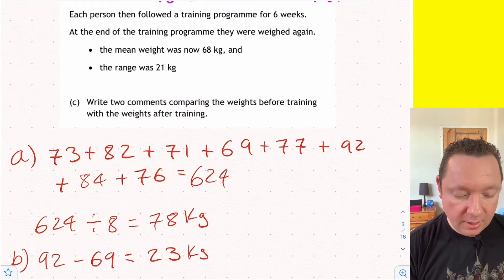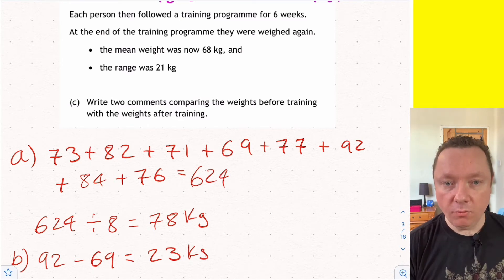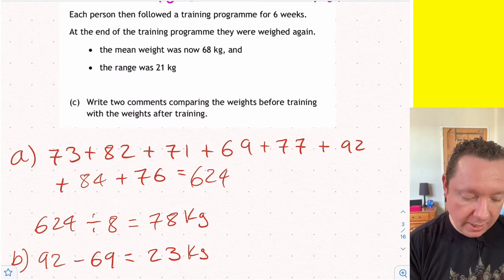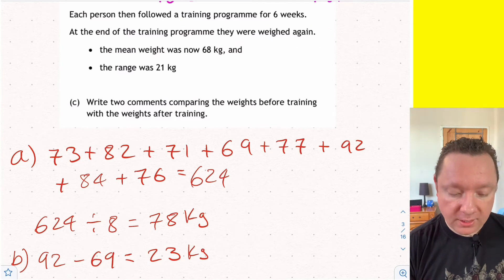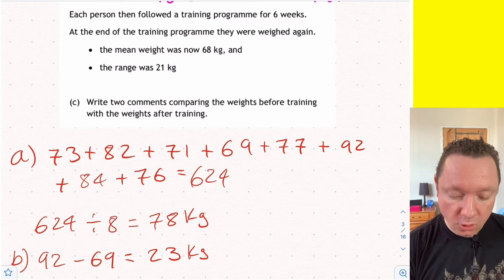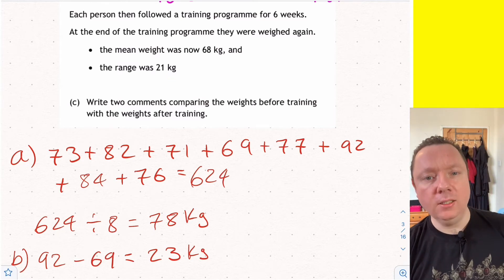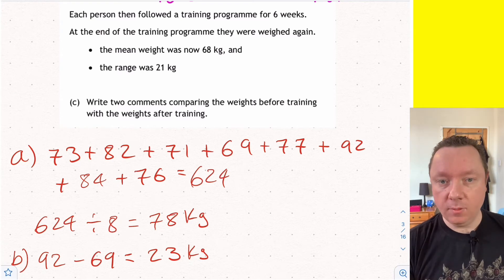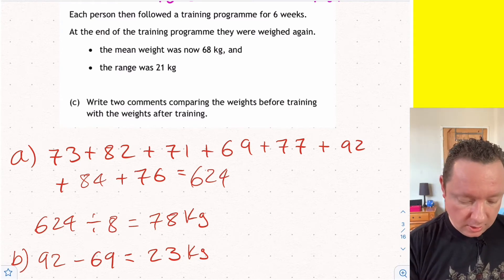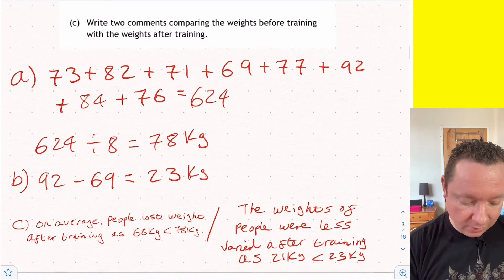Let's look at the second part of the question. It says, each person then followed a training program for six weeks. At the end of the training program, they were weighed again. The mean weight is now 68. The range is 21. Write two comments. So I'm going to write a comment that compares the means and a comment that compares the ranges.